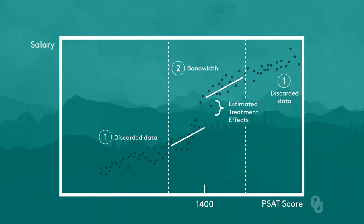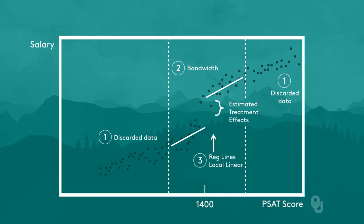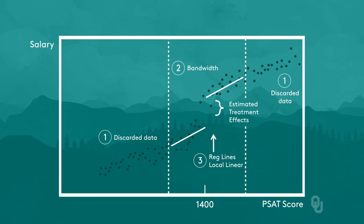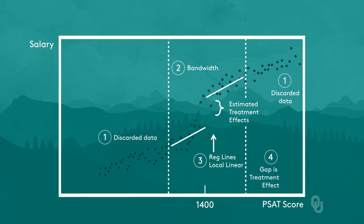Given the choice of bandwidth, the regression is just the outcome regressed on the variable-determining treatment plus a dummy variable to shift the intercept at the cutoff. Alternatively, the regression line could be allowed to have a different slope on either side of the cutoff. This graph illustrates the idea. We have data on either side of the cutoff, and our choice of bandwidth determines how much of the data we use to estimate the treatment effect with a local linear regression.